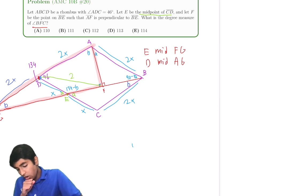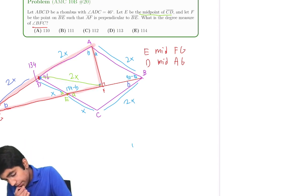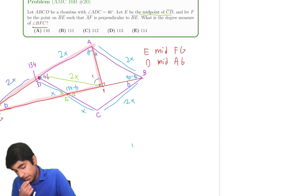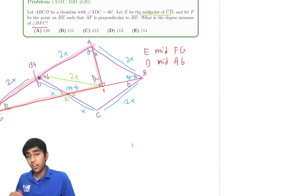So DF is also 2X. Hmm, that's interesting. DA is 2X. DF is 2X. That's cool. So if this angle is B, then this angle is going to be B. That's definitely helpful, right?